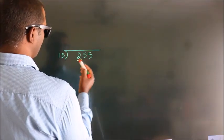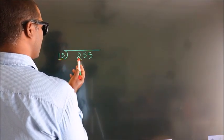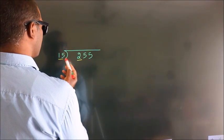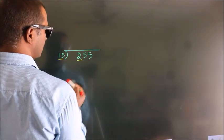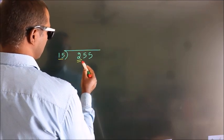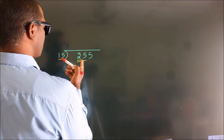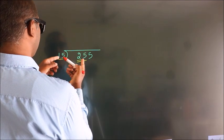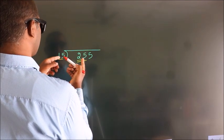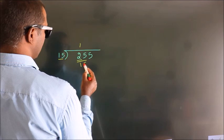Here we have 2. Here 15. 2 is smaller than 15, so we should take 2 numbers: 25. A number close to 25 in the 15 table is 15 once 15.